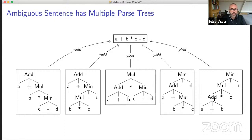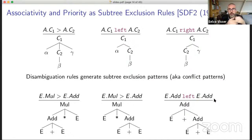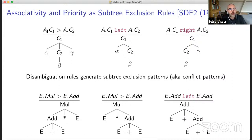So how do you go about disambiguating such sentences? In my thesis I defined a semantics for associativity and priority rules by means of subtree exclusion. Basically it says: if you have a priority rule or an associativity rule that defines a tree pattern, and if a subtree matches one of those patterns, then that tree is forbidden. So if we have the production A·C1 greater-than A·C2, then this tree shouldn't occur — a subtree with a constructor of lower priority should not occur as a child of a tree with higher priority.